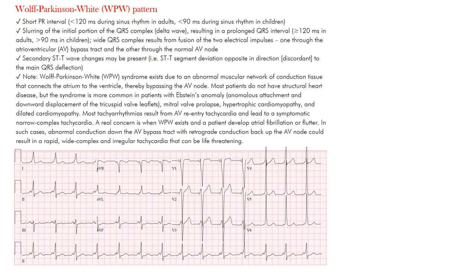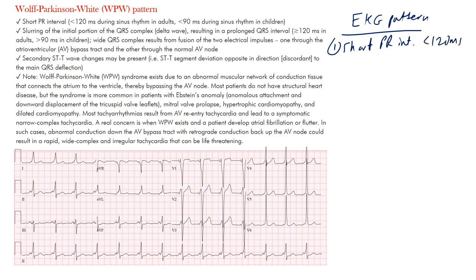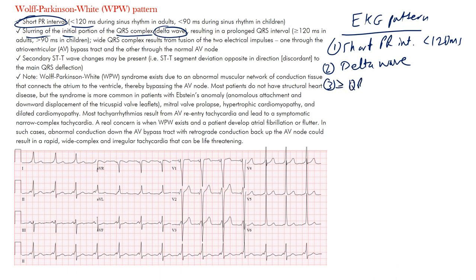So, Wolf-Parkinson-White pattern, or WPW pattern — what is the pattern we expect to see? The EKG pattern includes a short PR interval; in adults that tends to be less than 120 milliseconds. The second feature is slurring of the initial portion of the QRS complex, which is considered a delta wave.